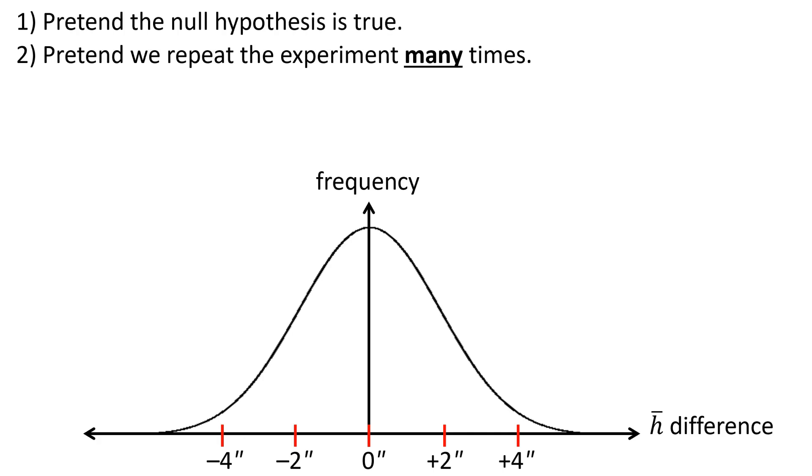The next question we ask is, where's your data? How often would your data occur? Is it right over here, really close to the highest, most frequent outcome? Is that where your data lies, does your data lie over here as an outlier?